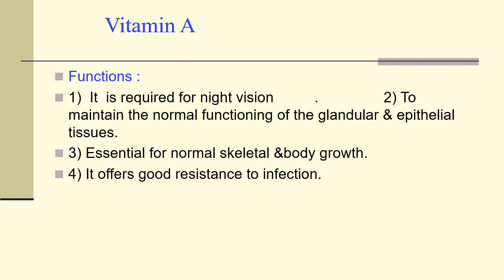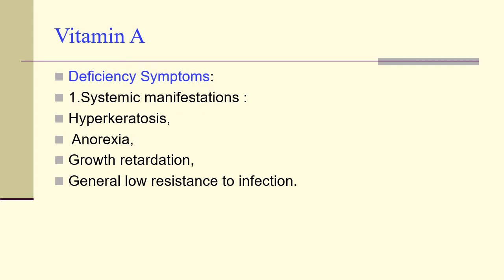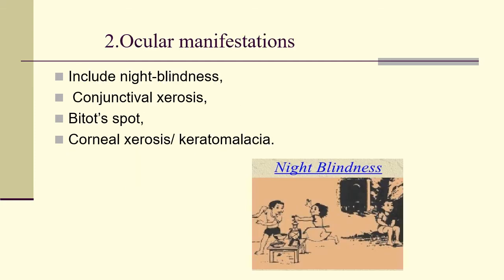The functions of vitamin A include: required for night vision, maintaining normal function of glandular and epithelial tissues, essential for normal skeletal and body growth, and offering good resistance to infection. Deficiency symptoms include systemic manifestations such as hyperkeratosis, anorexia, growth retardation, and general low resistance to infection. Ocular manifestations include night blindness, conjunctival xerosis, Bitot spot, corneal xerosis, and keratomalacia. A picture illustrates night blindness — two children are playing, but one boy sits in the corner because he cannot see in the dark. This complaint is called night blindness.